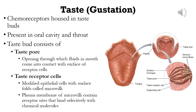The taste receptor cells have supporting cells, and at the base of those receptor cells are sensory nerve fibers that carry action potentials initiated due to the process of tasting. The taste receptor cells are simply modified epithelial cells with folds on the surface known as microvilli. The microvilli contain the receptor sites that bind selectively to chemical molecules, hence naming them chemoreceptors.